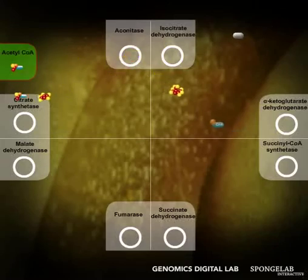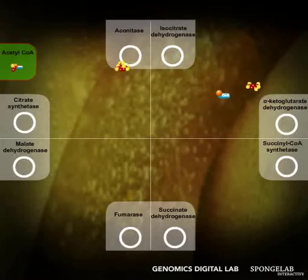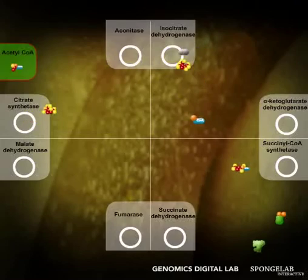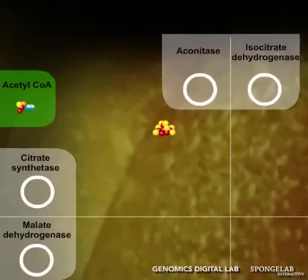Pyruvate, from glycolysis, is quickly converted to acetyl-CoA in the matrix of the mitochondria. Fundamentally, acetyl-CoA is a two-carbon molecule that is added to the system.